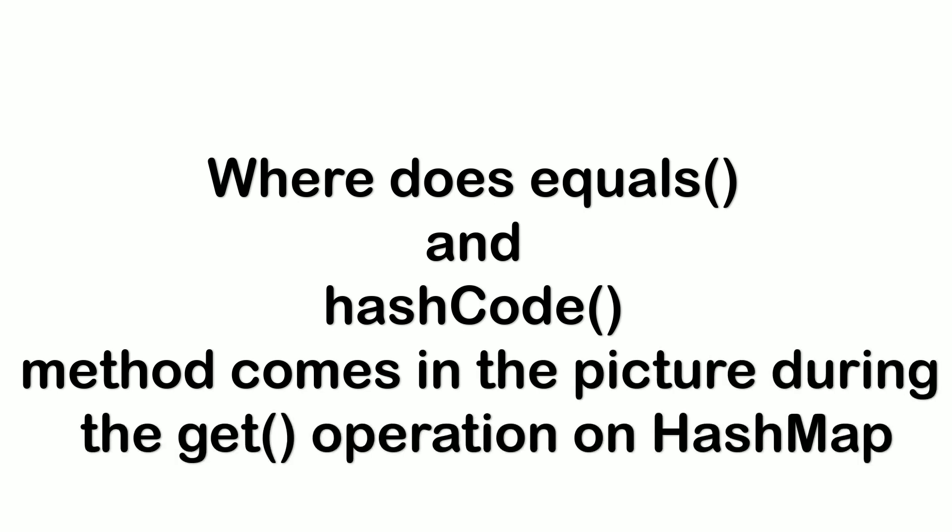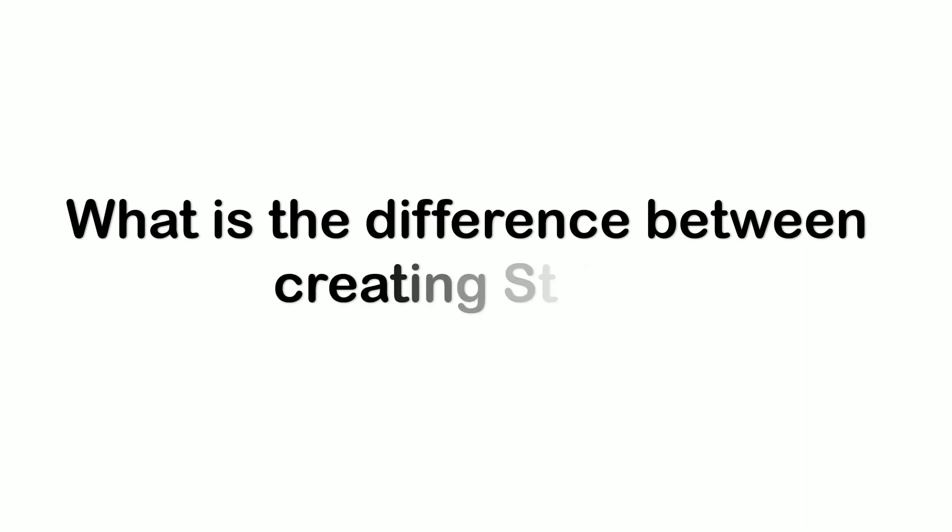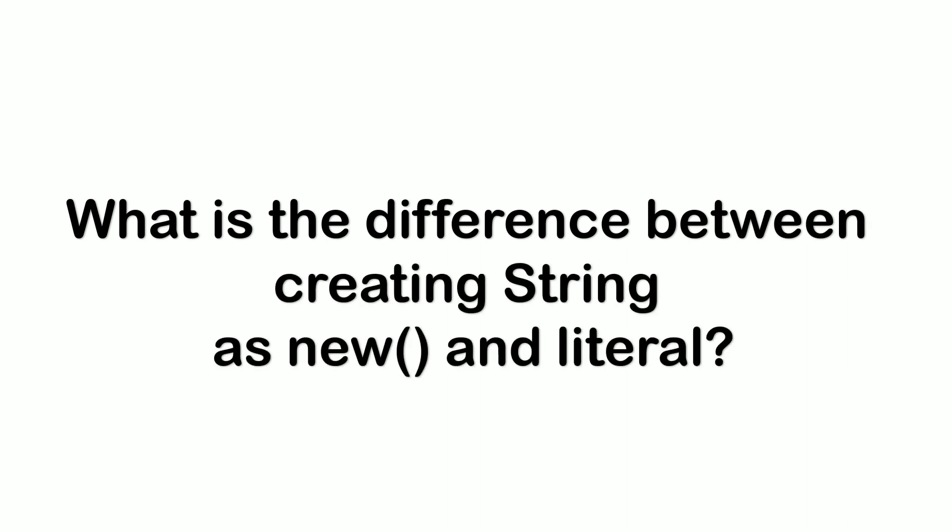The next question from collections was: how do the equals() and hashCode() methods come into picture during the get operation of a HashMap — basically how HashMap works internally, just framed differently. Then: what is the difference between creating a String using the new operator versus as a literal? I explained in detail about the String constant pool, the object created on it, and the object created on the heap. He was pretty impressed with the answer.